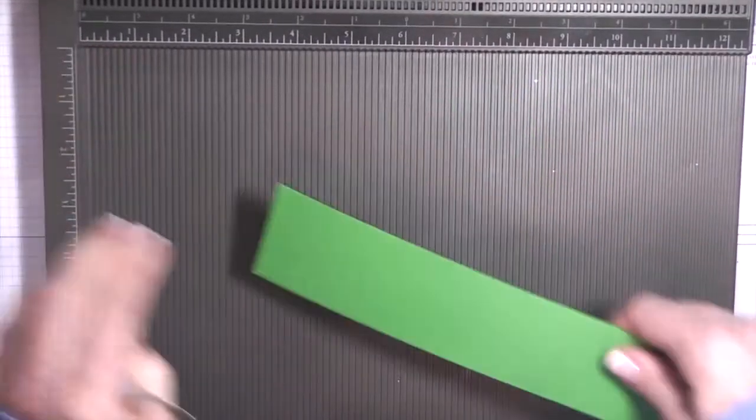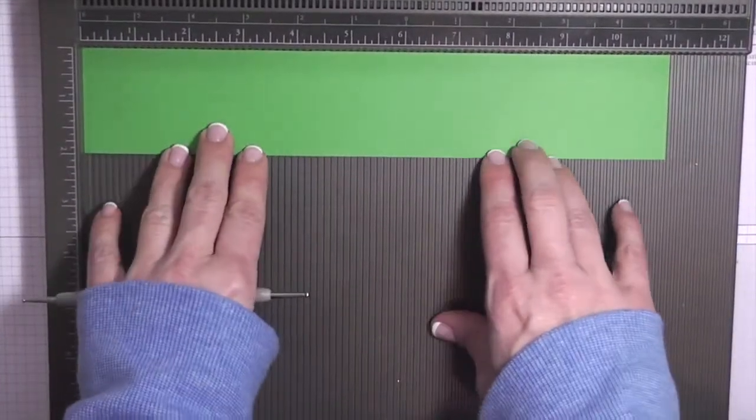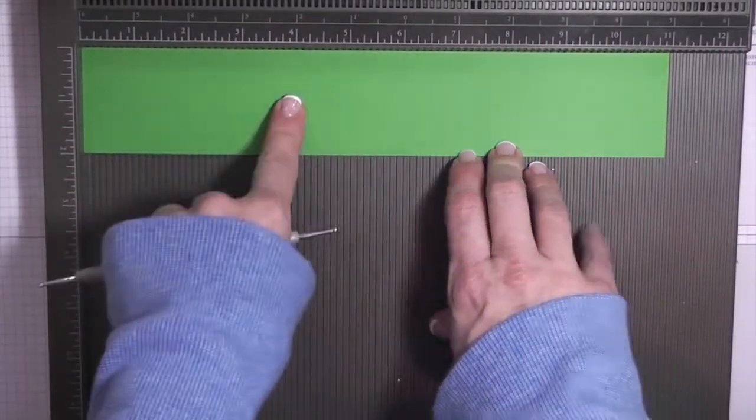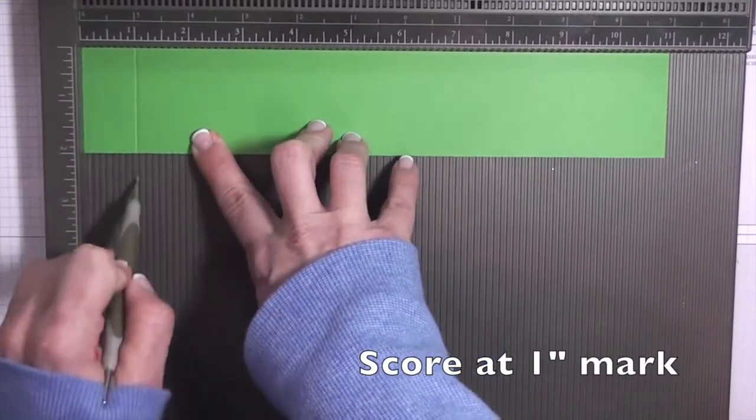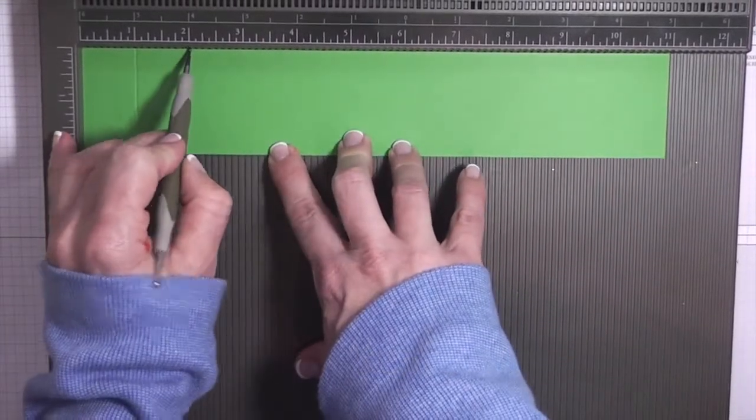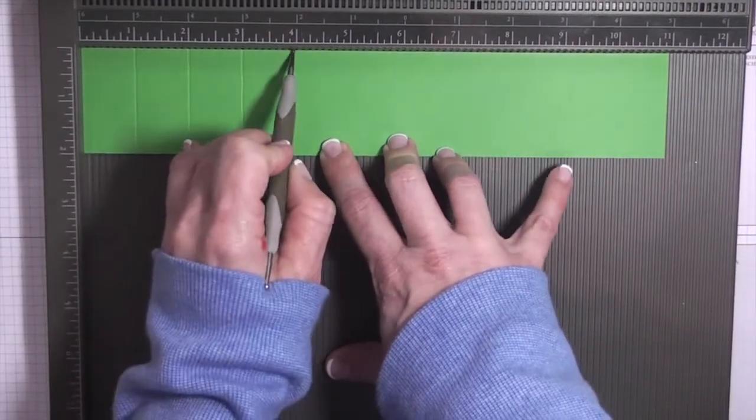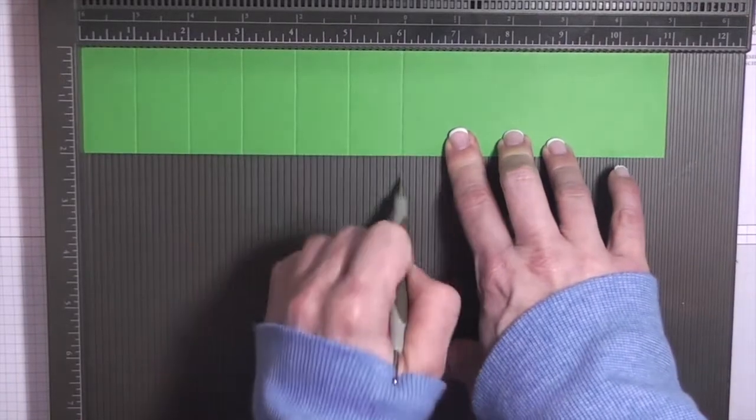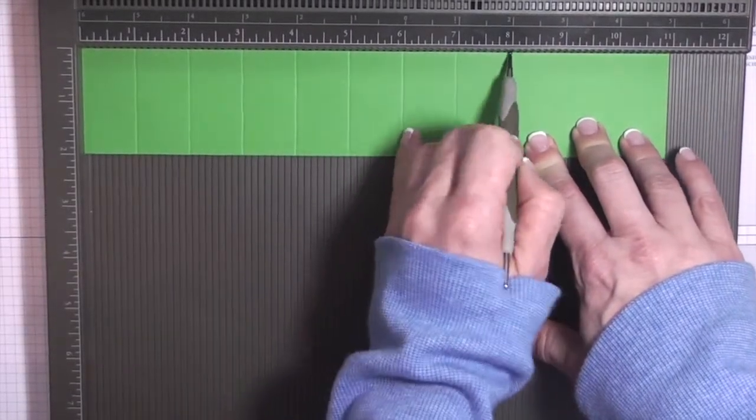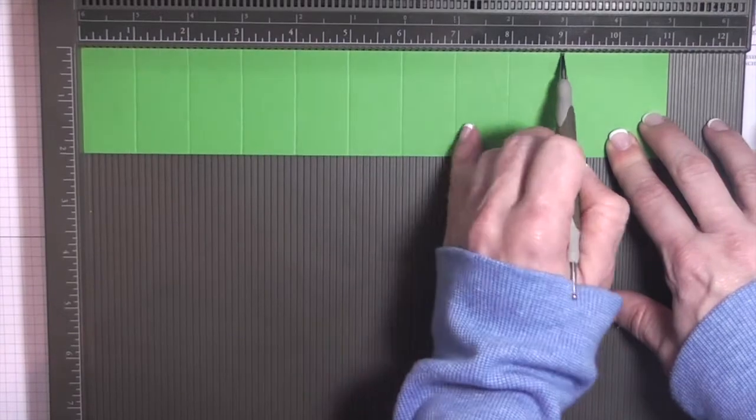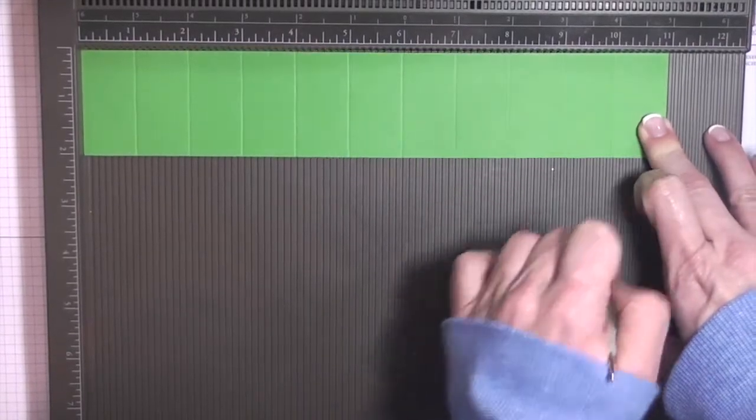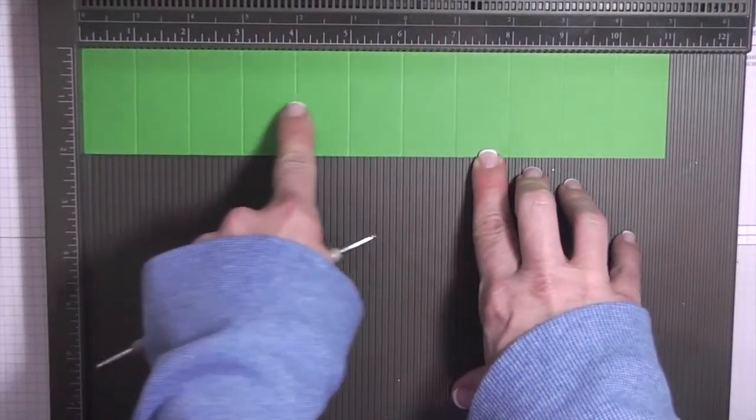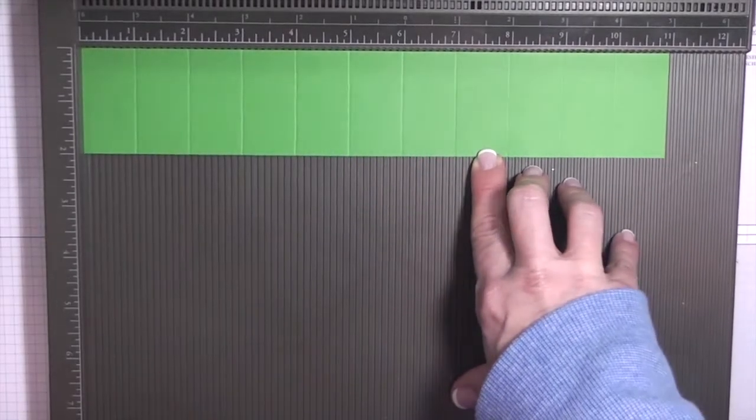And then we'll go ahead and score this as well. Now this is our two inch by 11 inch piece and you are going to score at every inch mark. So one inch, two inch, three and so forth until you get to 10 inches. So this strip, you need to score at every inch.